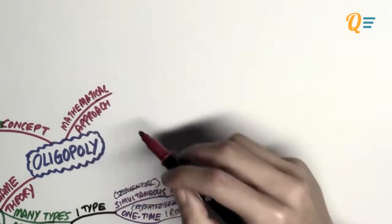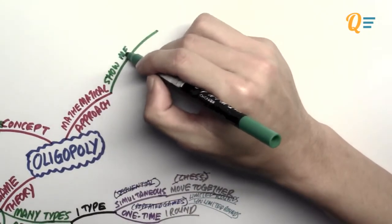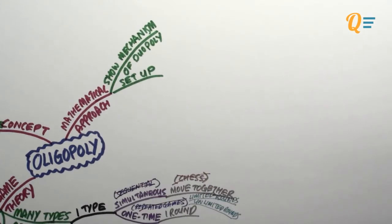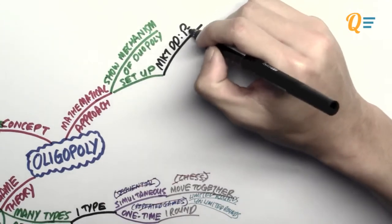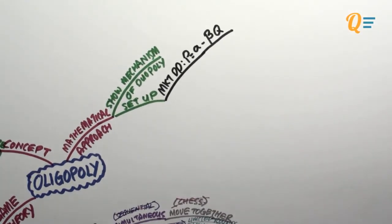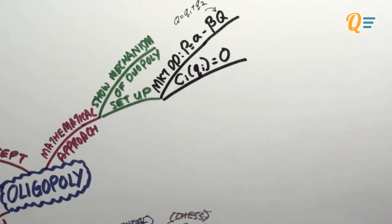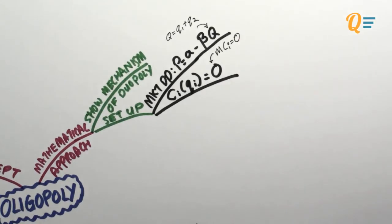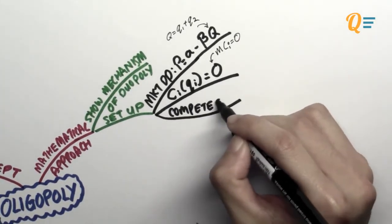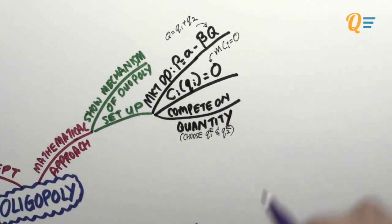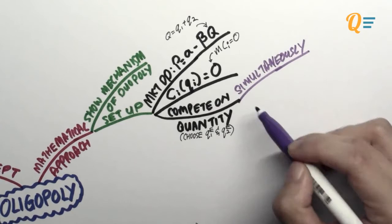Now let's move to a mathematical approach to the duopoly, to show the mechanism of how a duopoly works. We have a market demand function: P equals A minus beta times quantity, where quantity is the total output of firm 1 and firm 2. The cost function for each firm is simply zero — so marginal cost is constant and zero at all levels. Both firms compete on quantity by choosing Q1E and Q2E, making their moves simultaneously. This is known as a Cournot game.